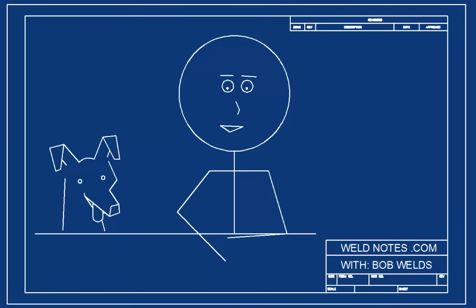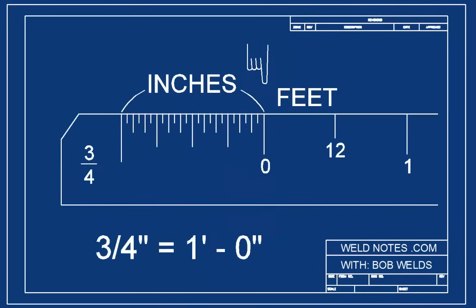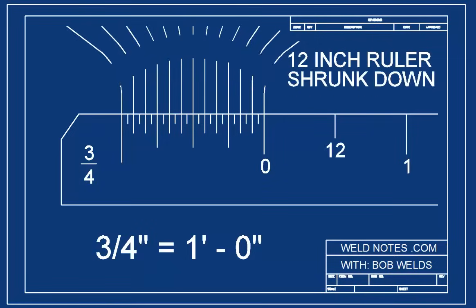Now, let's look at one more scale. Let's look at the scale for 3 quarters of an inch equals a foot. First, we look for the 0, and we find here the inches are on the left and the feet are on the right. We'll remember that this part of the ruler represents a 12-inch long ruler that has been shrunk down to the scale we're using.